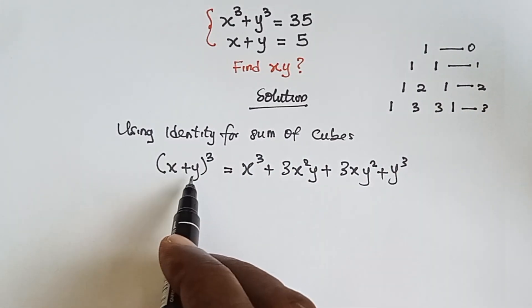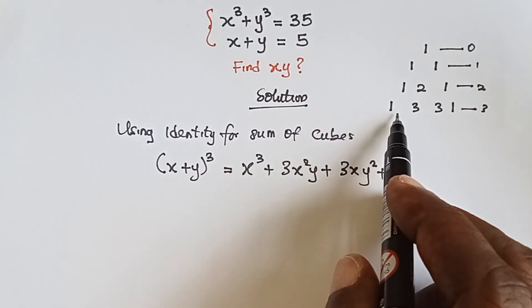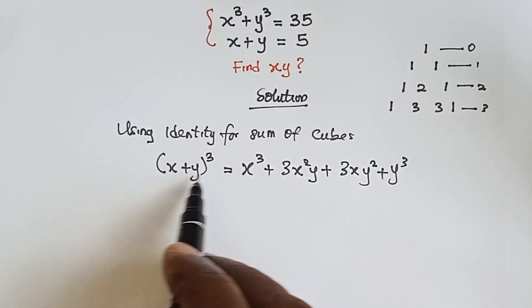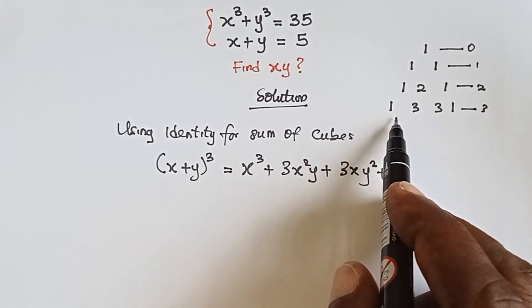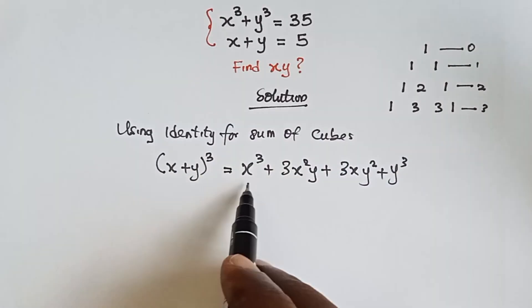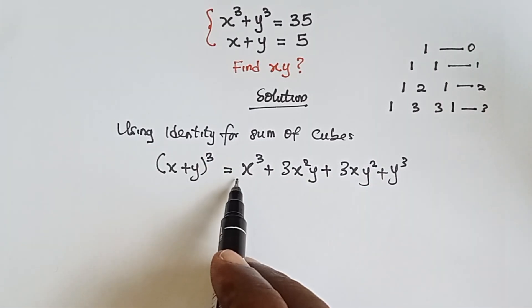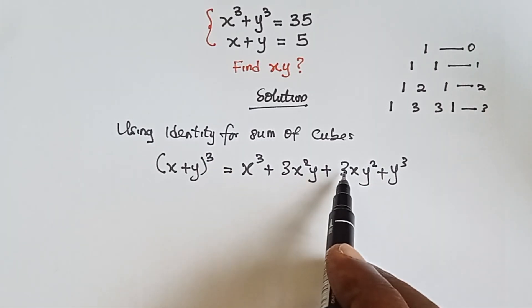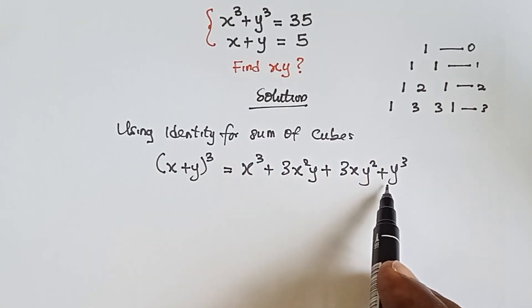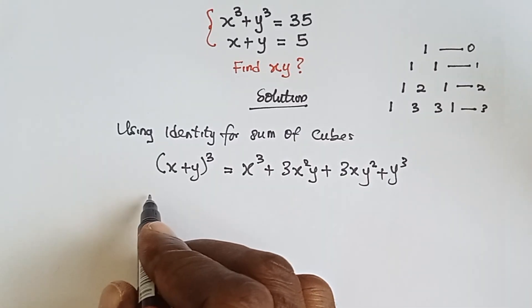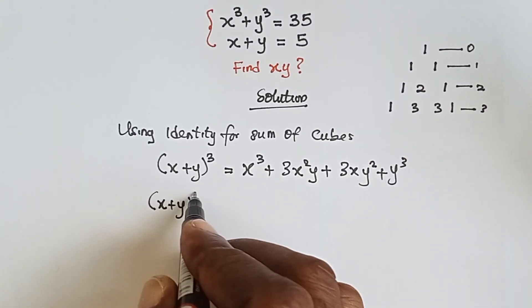Since we have x plus y raised to power three, we expect the coefficients of the variable terms to be 1, 3, 3, 1 — which we have here. So let's simplify. We have x plus y cubed; let's put x cubed and y cubed together.